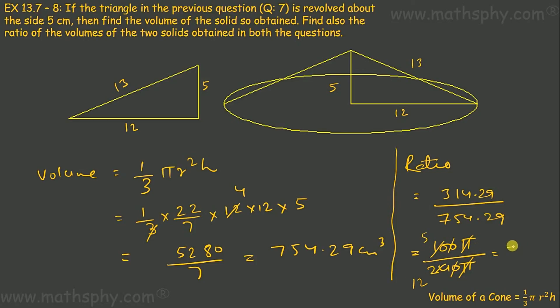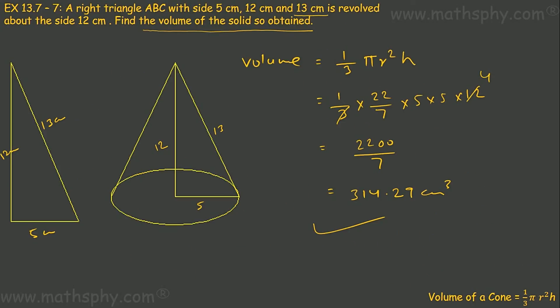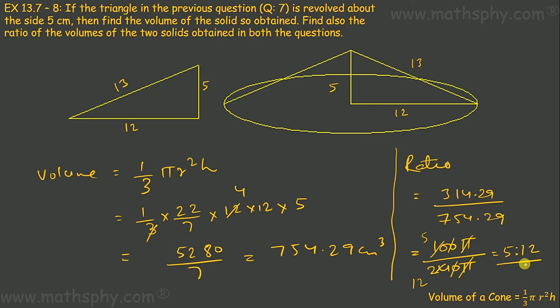So this would be 5/12. So ratio of this cone and this cone is 5:12. That's the answer here.